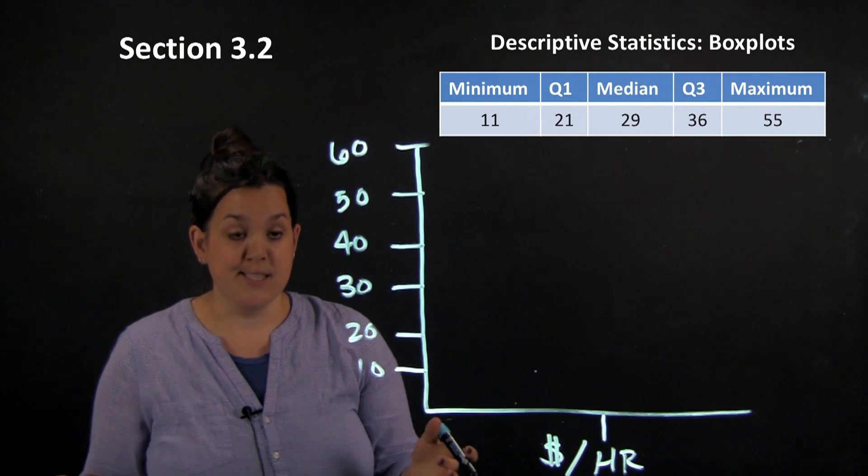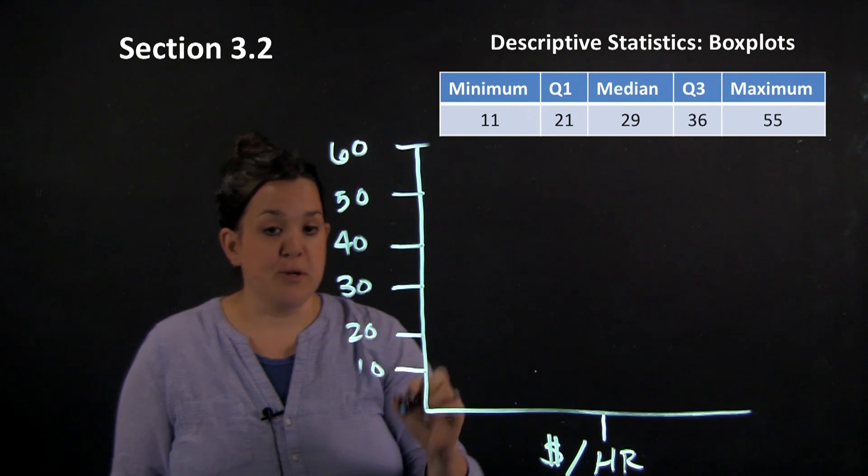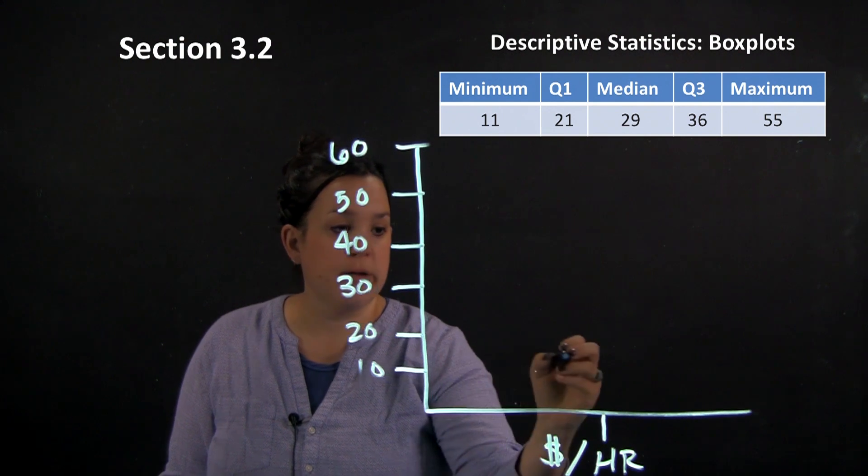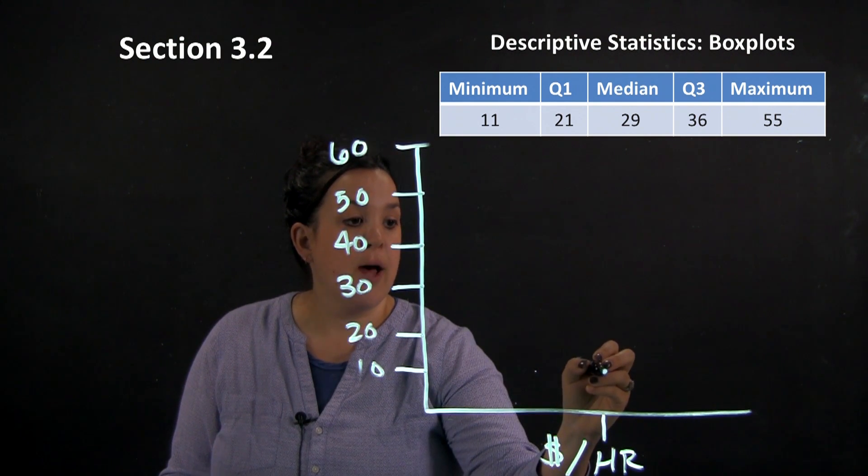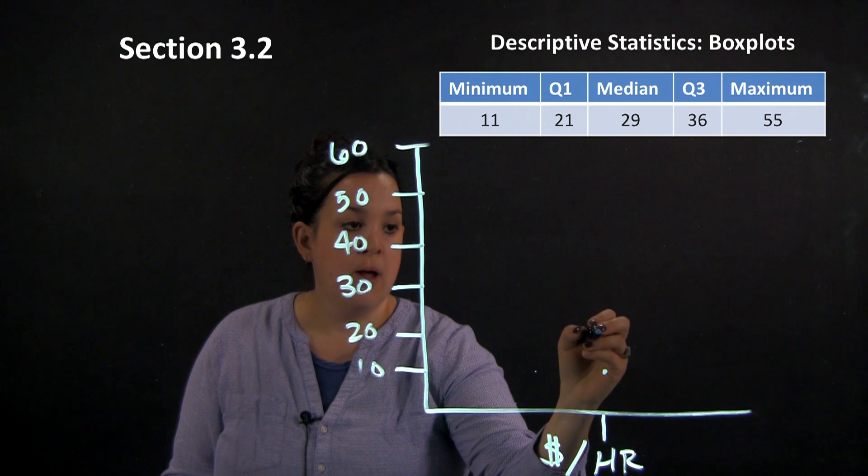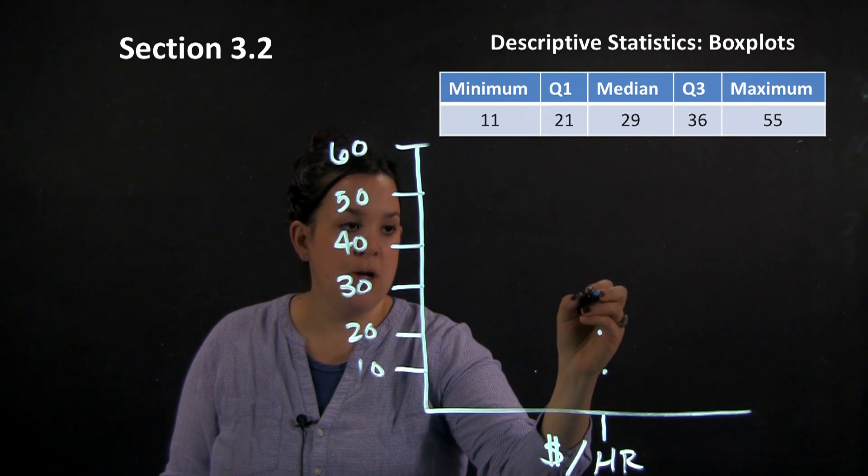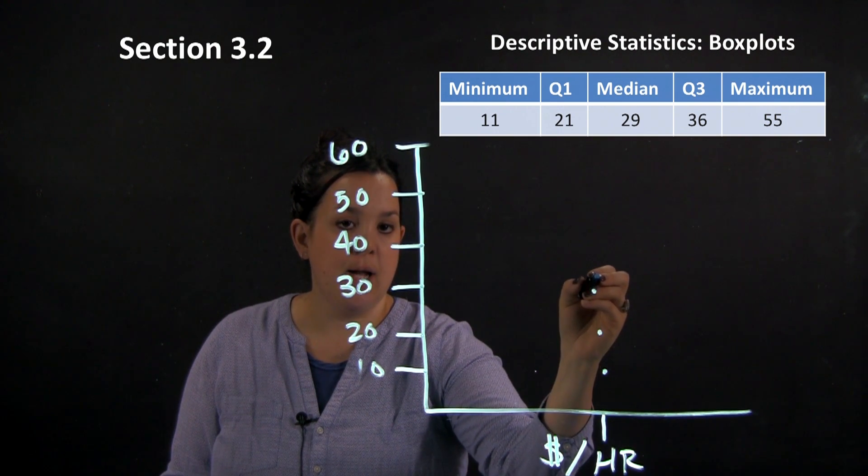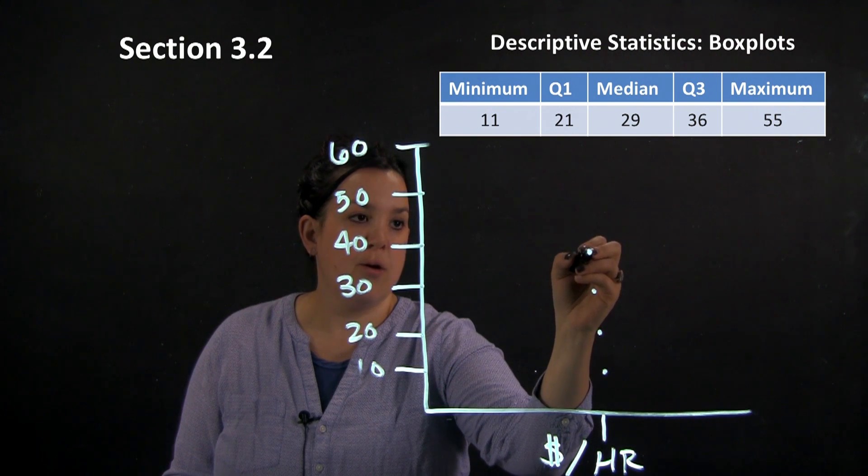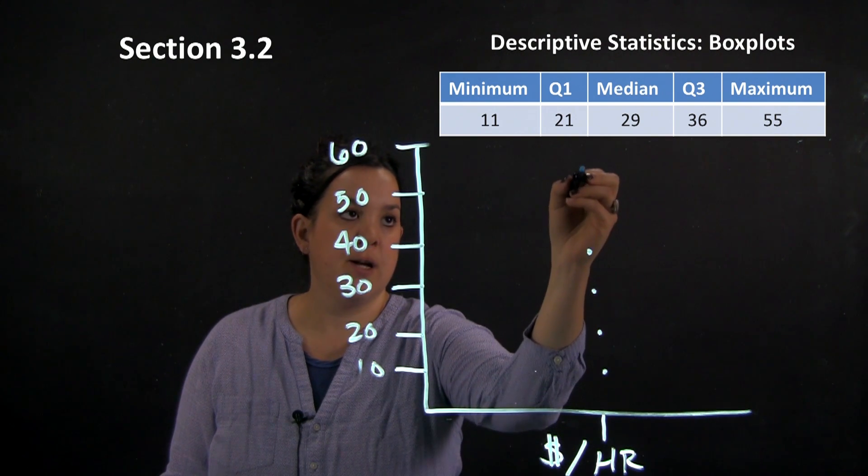So the box plot since it's a graphical display of the five number summary when I draw these I just put a little dot everywhere that there's a number. So we would have 11 and then about 21, about 29, 36 and 55.